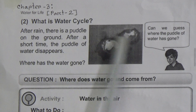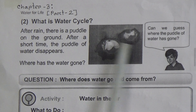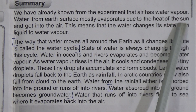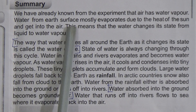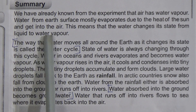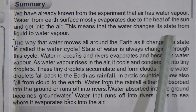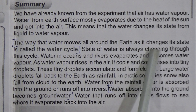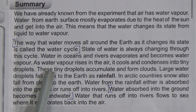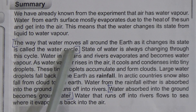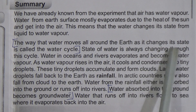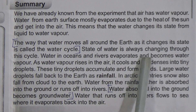First: what is the water cycle? After rain there is a puddle on the ground, and after a short time the puddle of water disappears. We have already known from the experiment that the air has water vapor. Water from the earth's surface mostly evaporates due to the heat of the sun and gets into the air. This means the water changes its state from liquid to water vapor. The way that water moves all around the earth as it changes its state is called the water cycle.